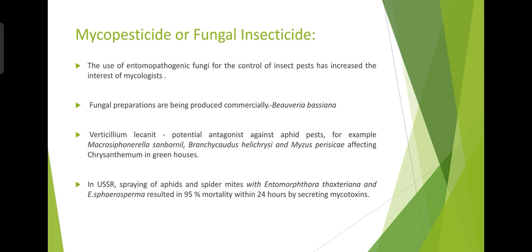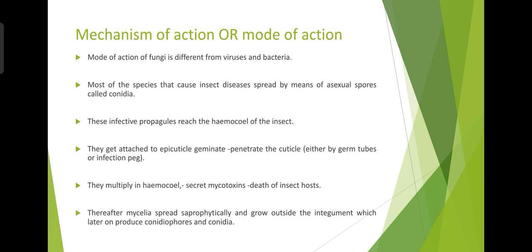Fungal preparations are being produced commercially. An example we will study here is Beauveria bassiana. Some other examples are Verticillium lecanii from England, showing potential as an antagonist against aphid pests such as Macrosiphoniella and Brachycardus species and Myzus persicae that affects chrysanthemum in greenhouses. In USSR, spraying of aphids and spider mites with Entomophthora thaxteriana and Entomophthora sphaerosperma resulted in almost 95% mortality within 24 hours by secreting mycotoxins.